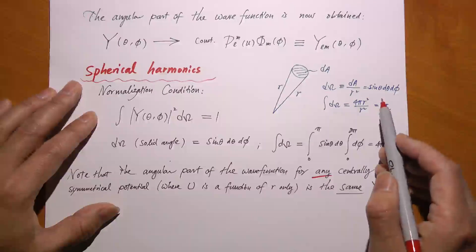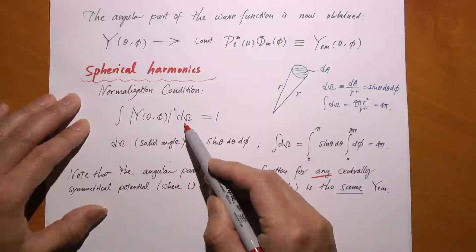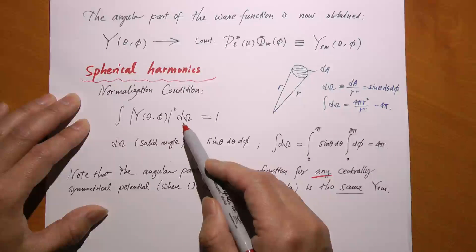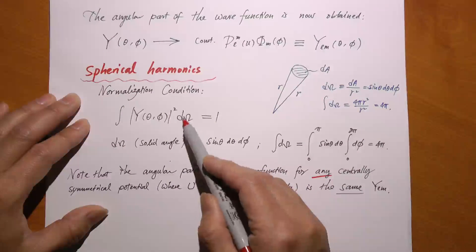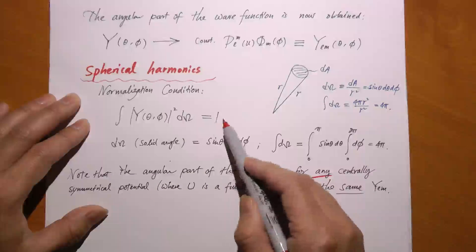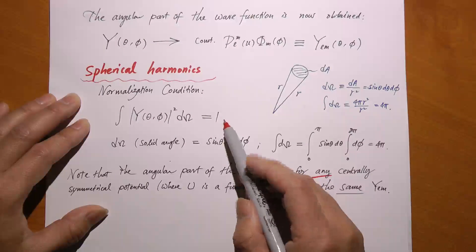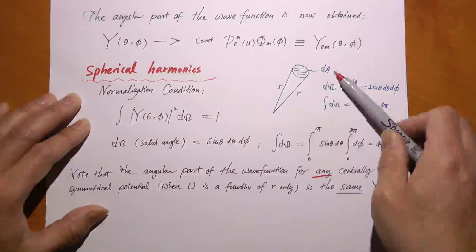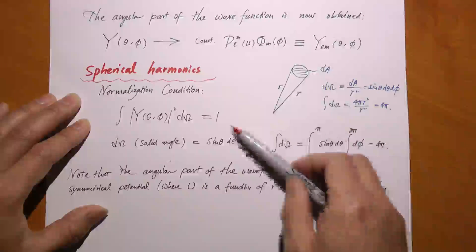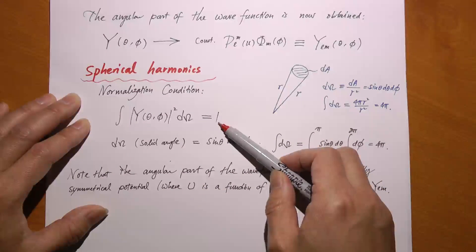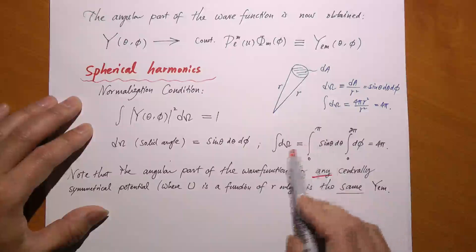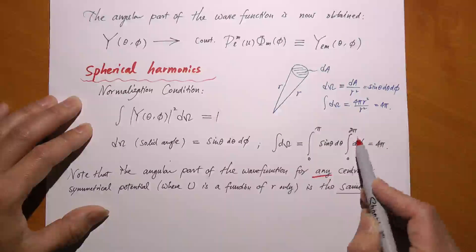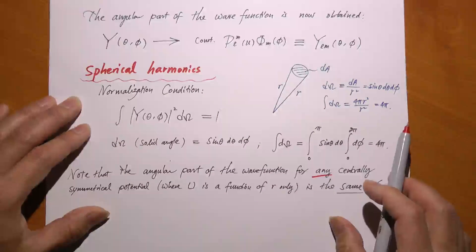We demand that the integration of the modulus squared over the entire solid angle equals one. That tells me that this particle must be found in some direction in space — if you count all the possible directions, the chance of finding this particle equals one, of course. So I plug d-omega in terms of theta and phi into the integral and integrate over theta and phi, and of course I get 4 pi as expected.